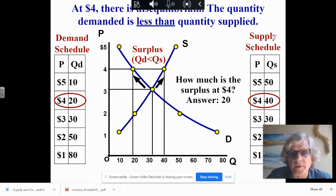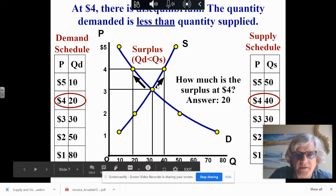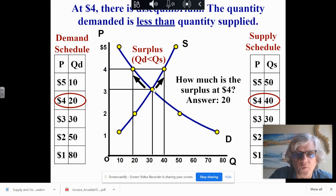What you have is a movement along both lines simultaneously. So from $3 to $4, the supply will actually increase in quantity supplied, so they're going to make 40 instead of 30. And then for the demand, it's going to be a decrease in quantity demanded going from 30 down to 20.